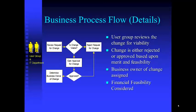The user group and IT department review the change for viability. The change is either rejected or approved based upon merit and feasibility, and they assign a business owner of the change. Financial feasibility is also considered — if a change takes hundreds of hours but will only save minutes per year, it typically gets rejected.